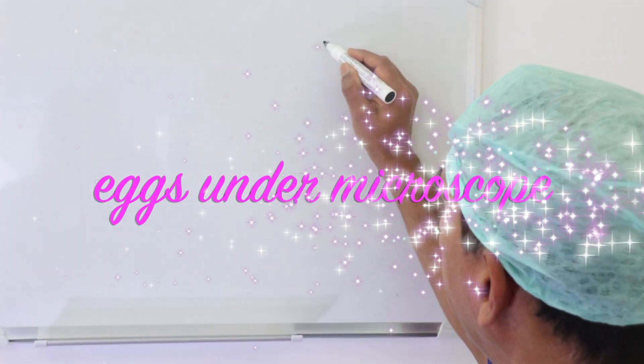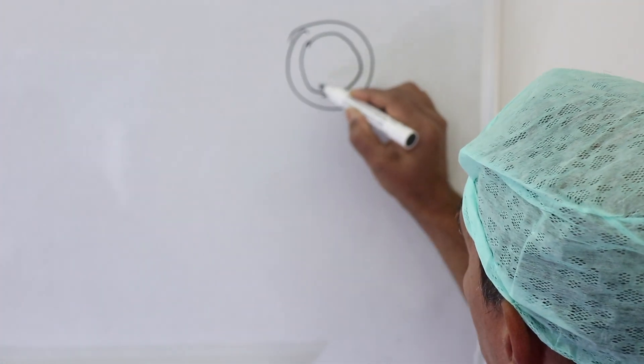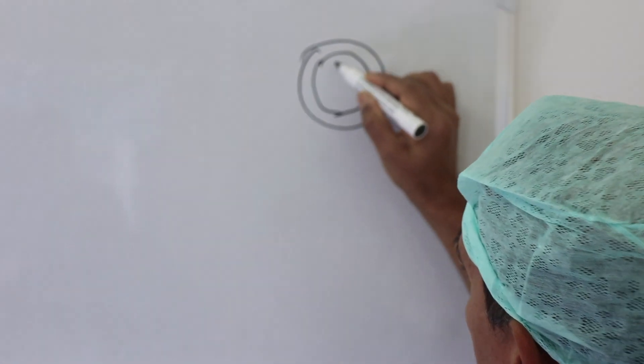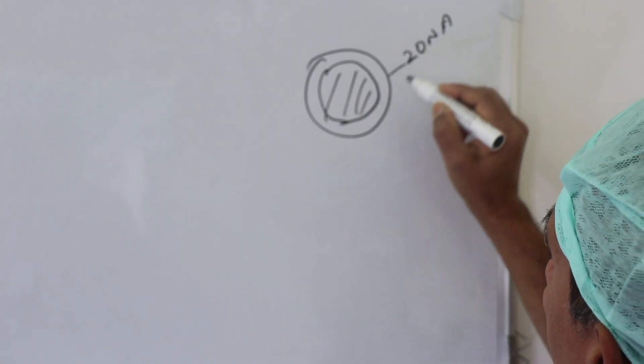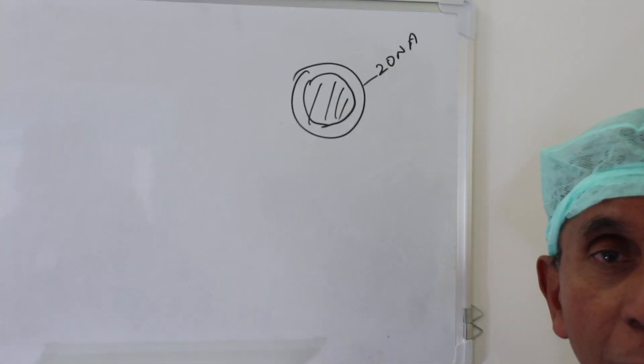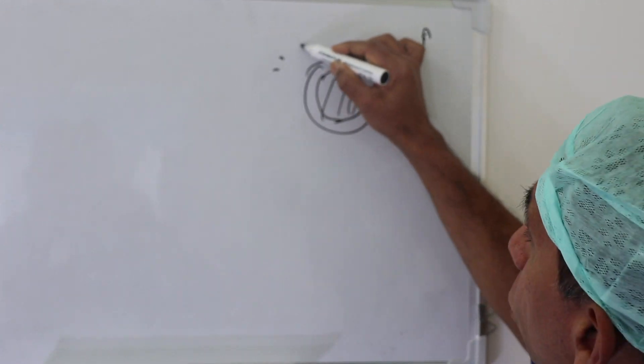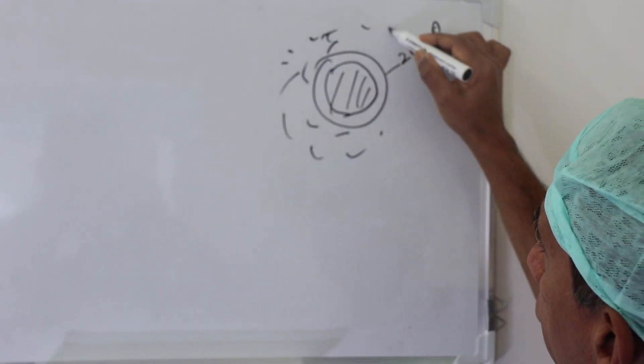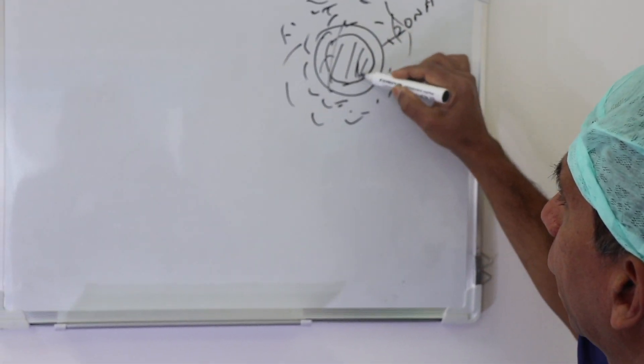You all know the egg has a cytoplasm in the middle and then the zona. When the eggs come out of the follicle, it is surrounded by lots of cells, the cumulus cells, and therefore we don't see the egg clearly.